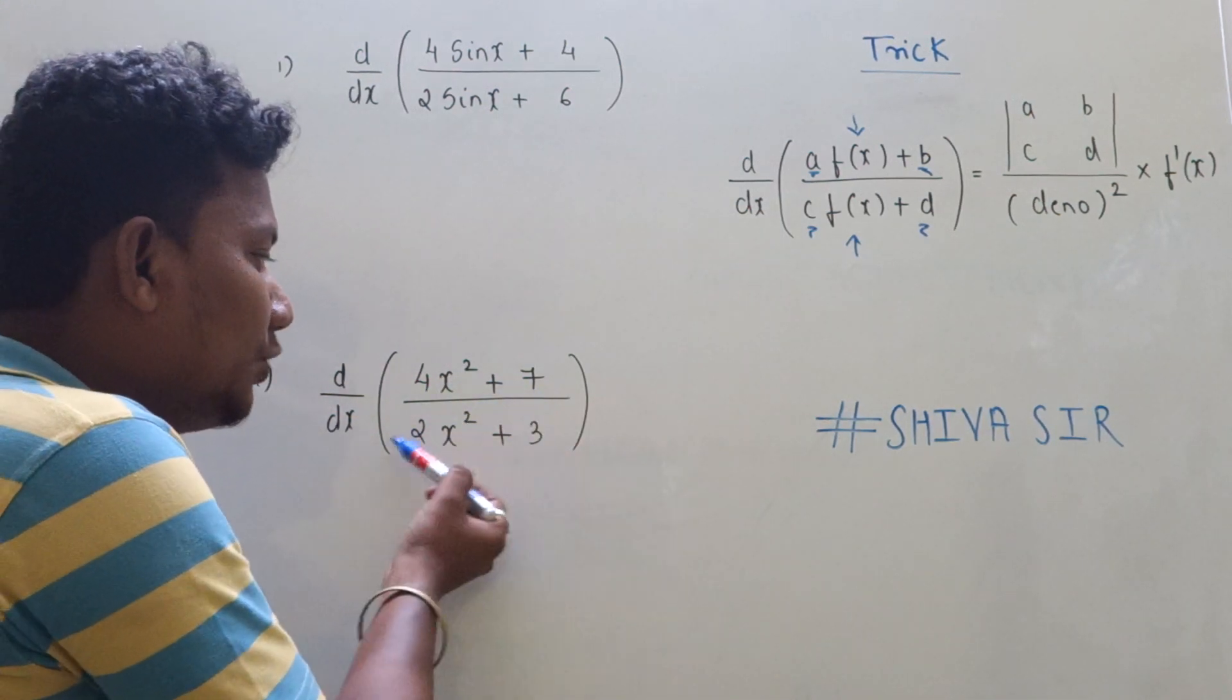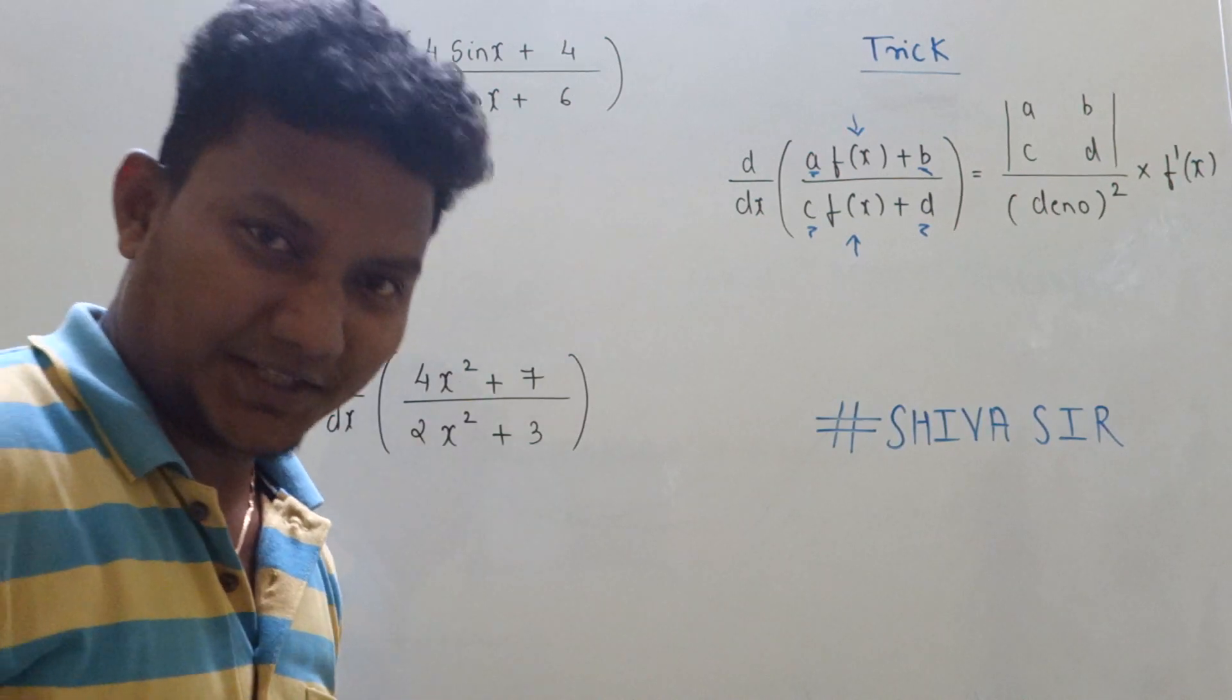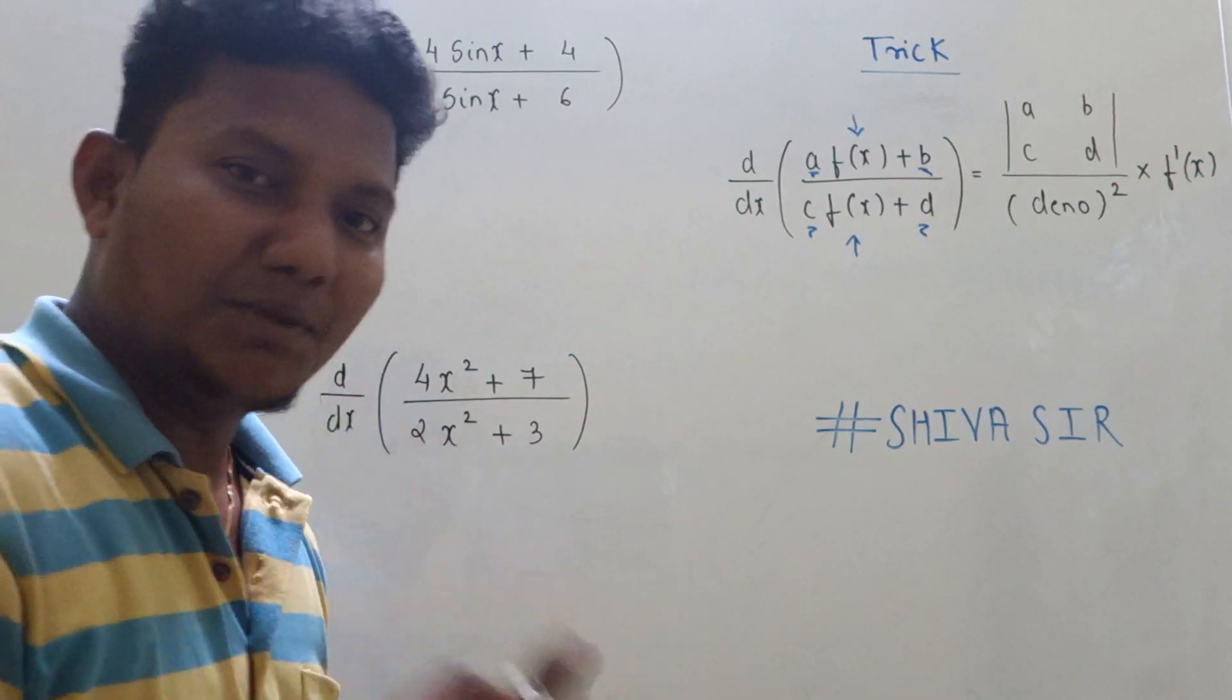And 4, 7, 2, 3 are constants over there. So let's begin with the trick.